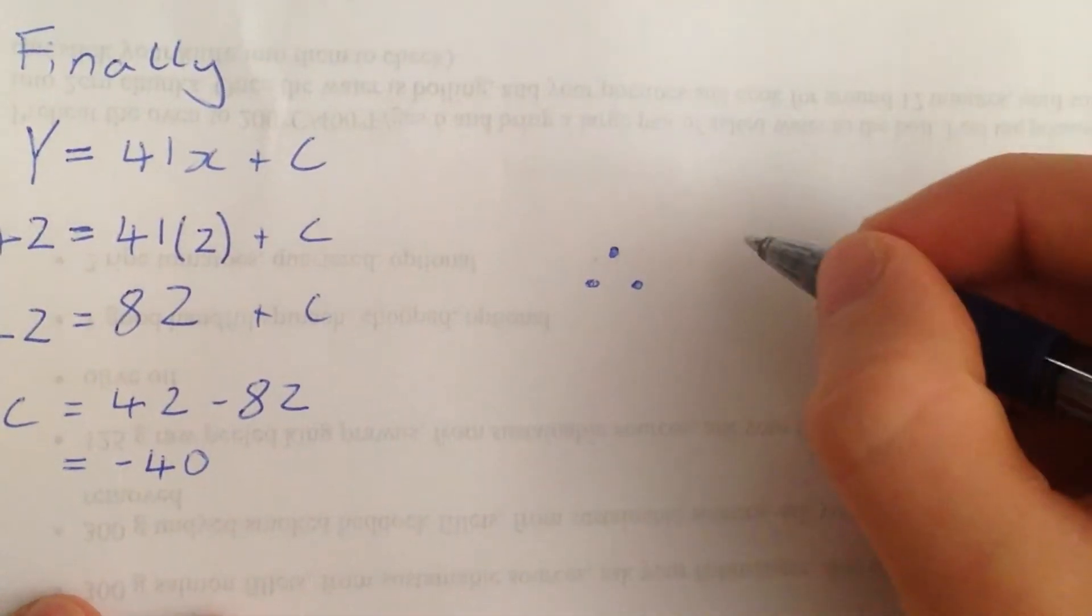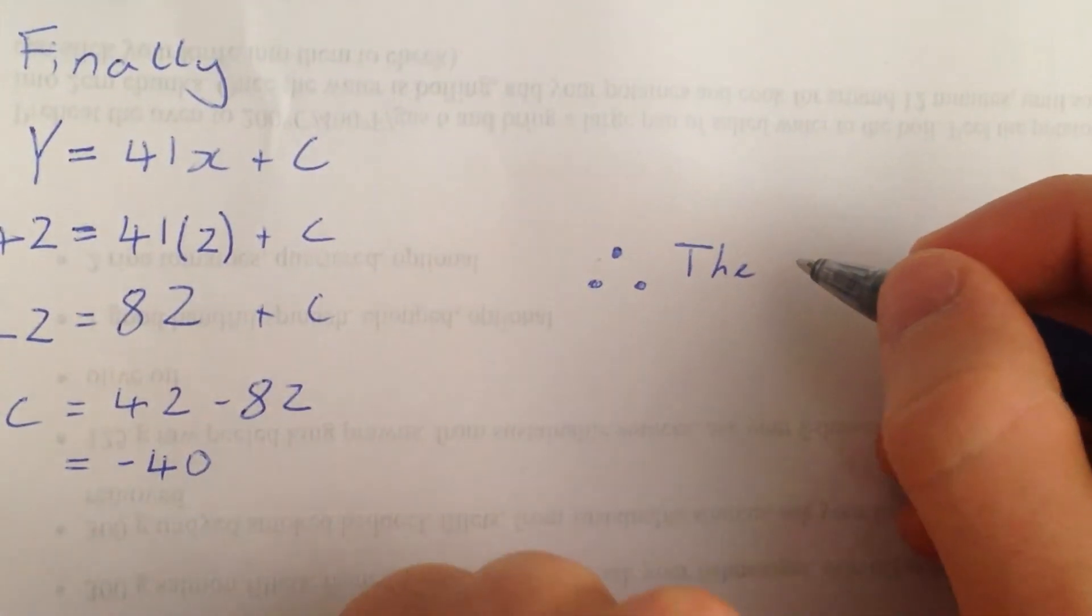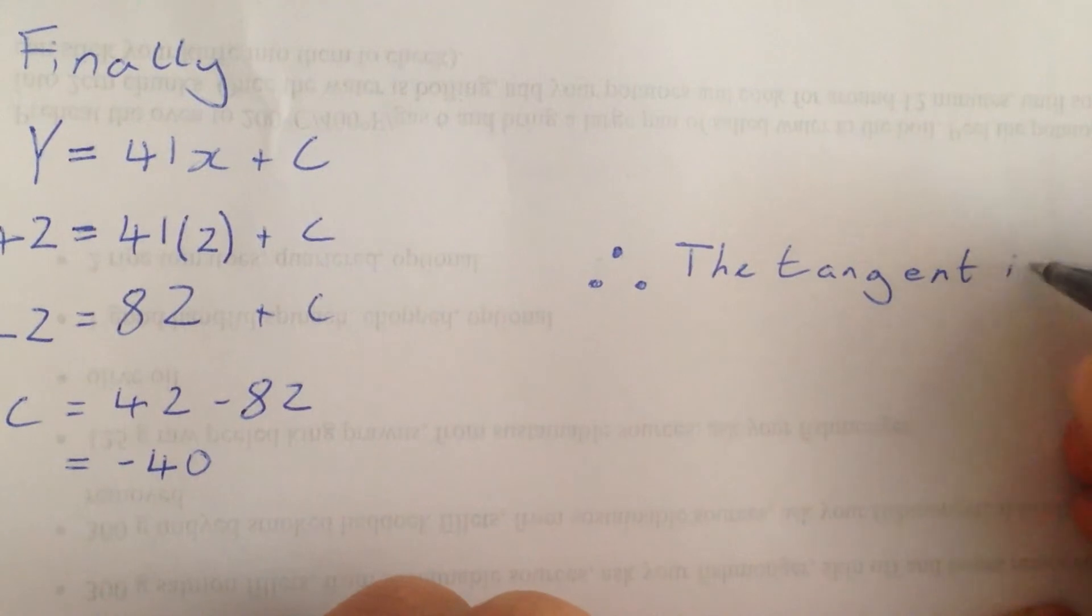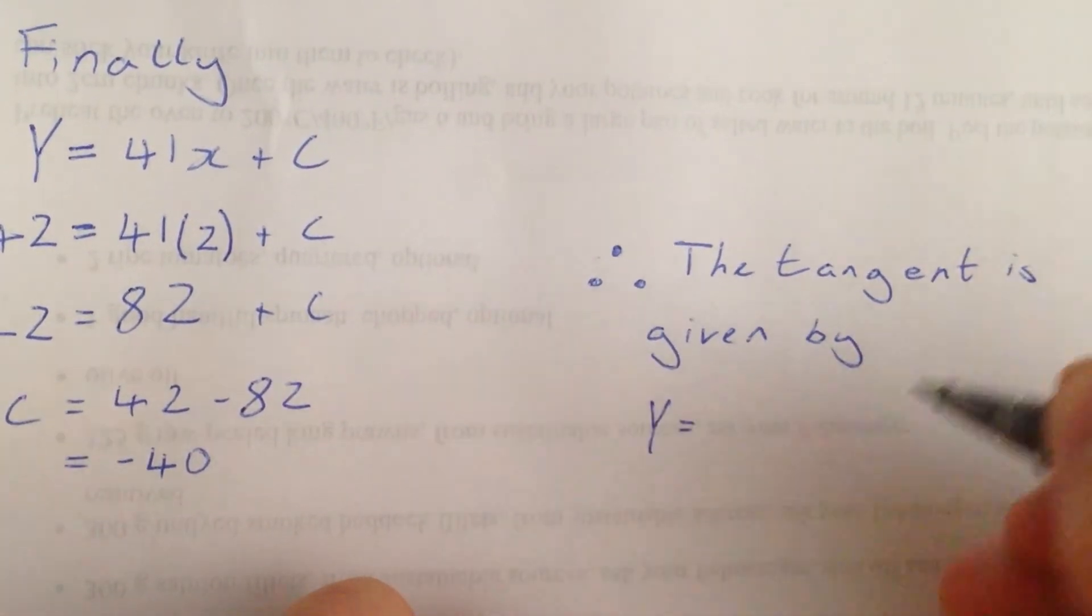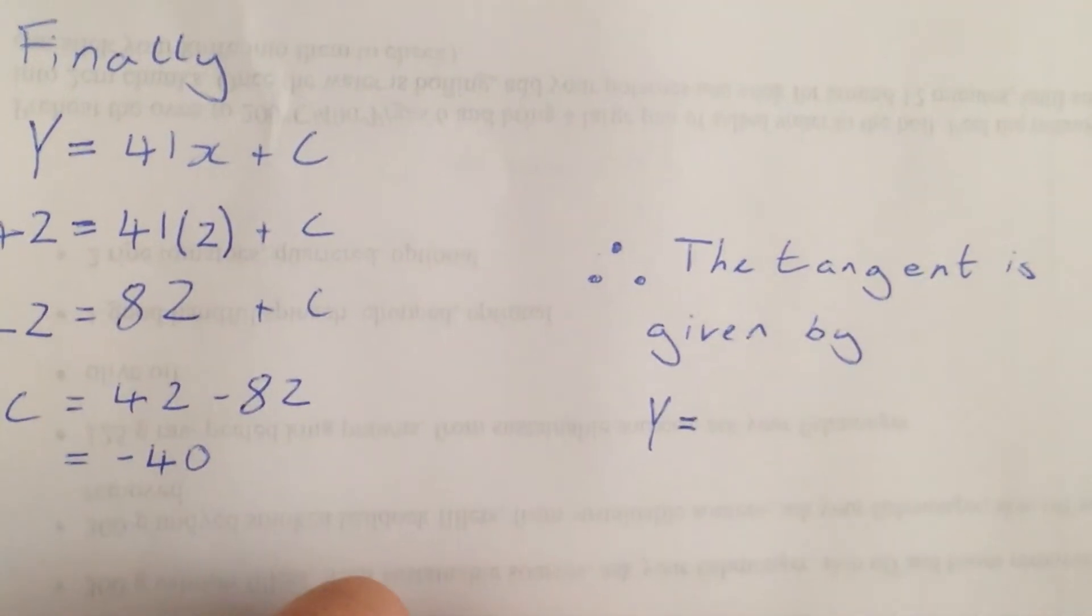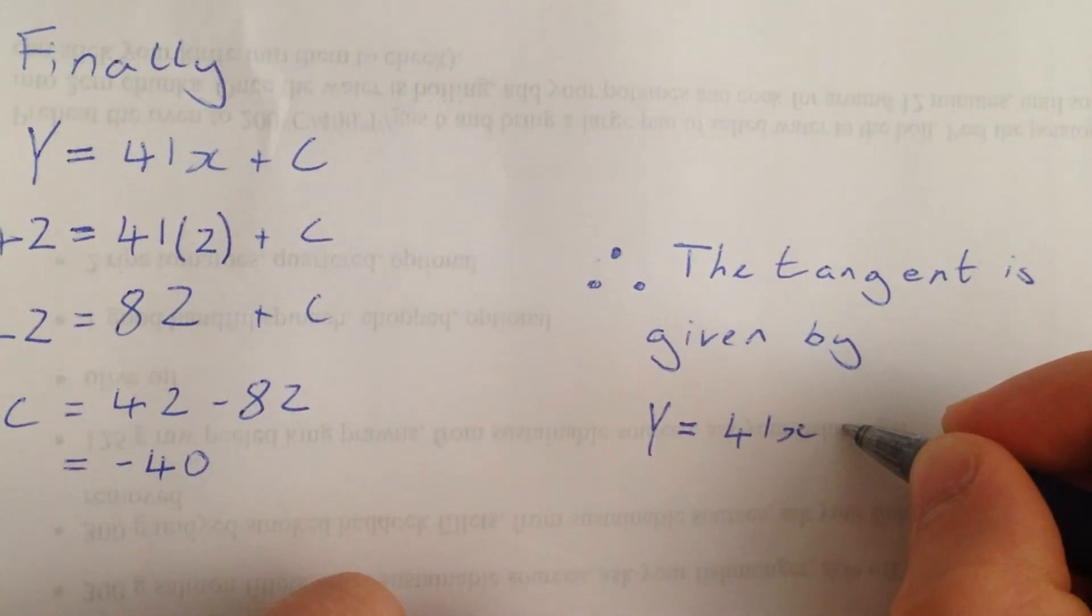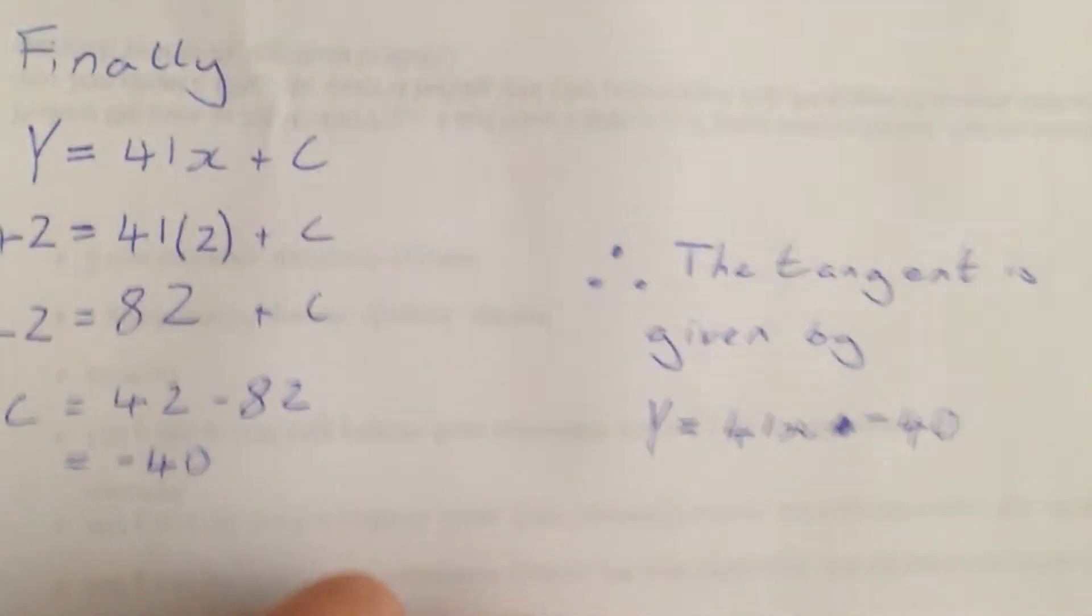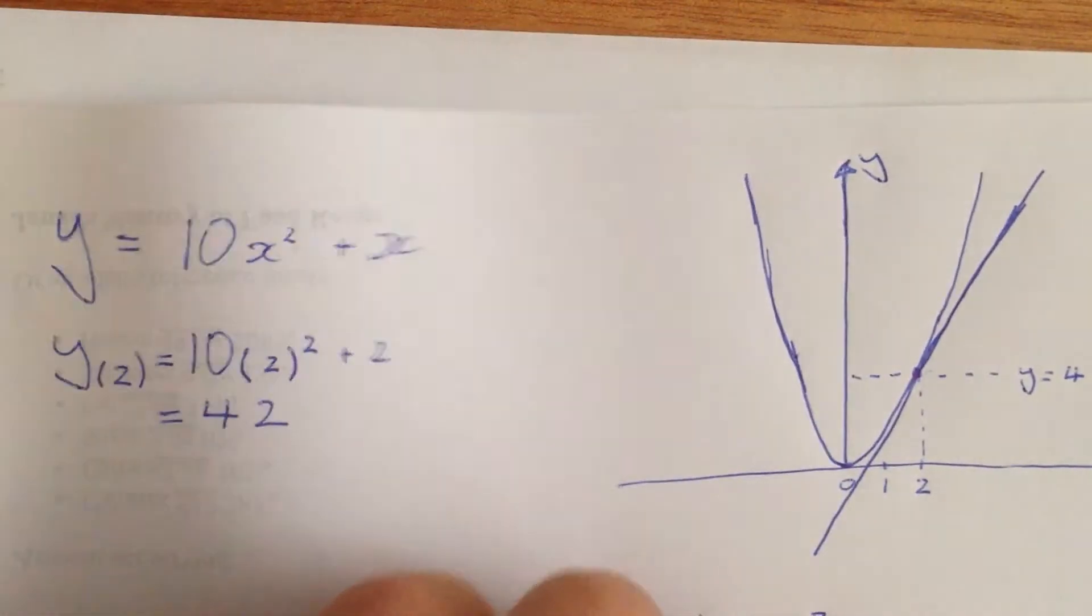Therefore, this is the whole equation. The tangent, I'll just call it the tangent line. I won't write out the tangent line to the curve, etc. The tangent is given by y equals 41x plus... oh sorry, y equals 41x minus 40. And that is the equation of this line here.